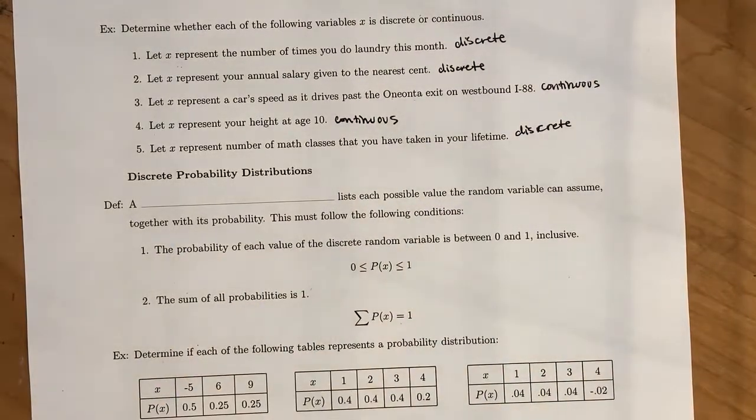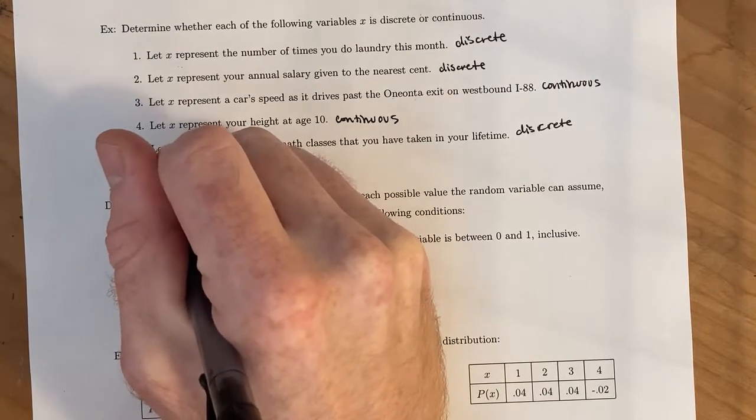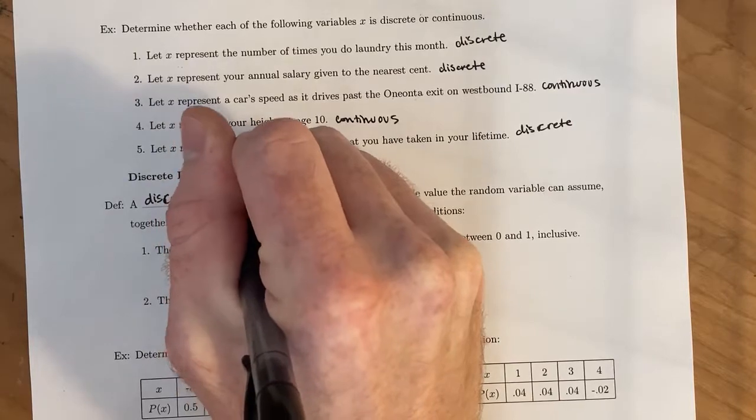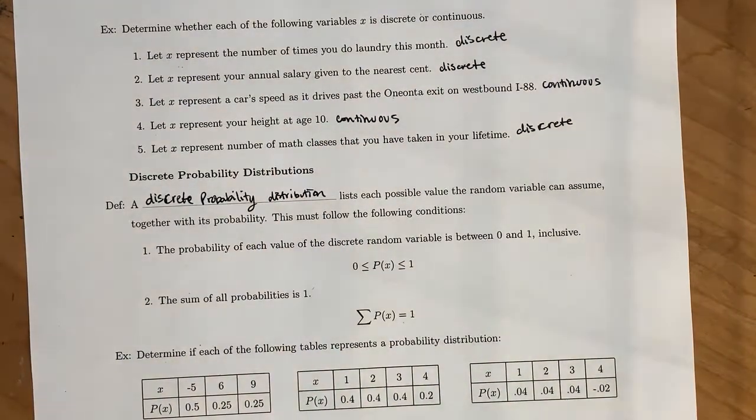And so we're going to focus in on discrete probability distributions, which are essentially applying these discrete random variables to probability. And this is what we're going to focus in on for the rest of the chapter. So a discrete probability distribution lists each possible value the random variable can assume together with its probability. And so it's going to be given to you in tabular form, certain tables.